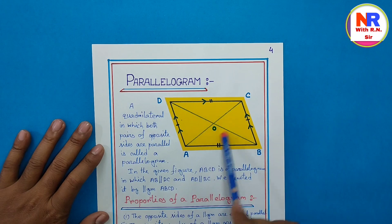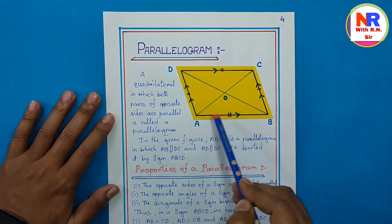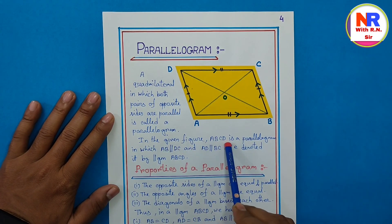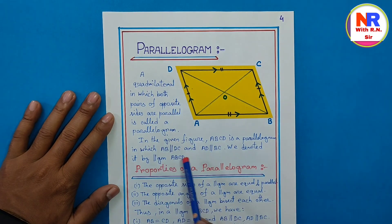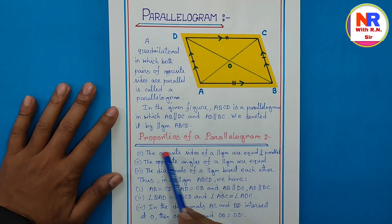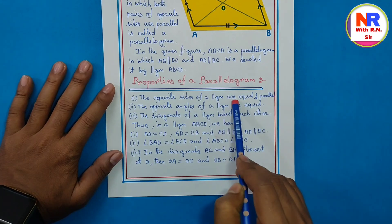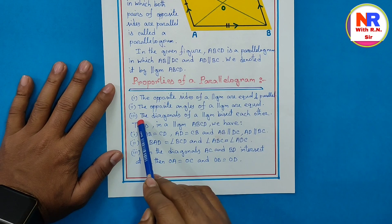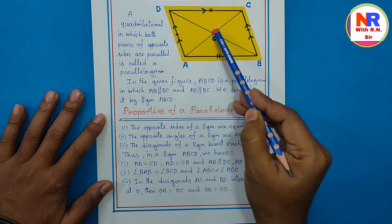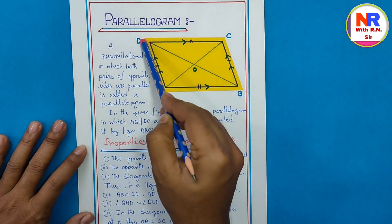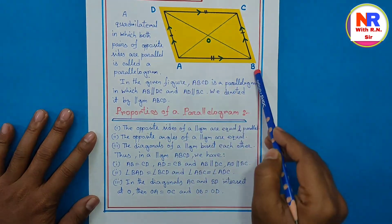Page number 4 — parallelogram. A quadrilateral in which both pairs of opposite sides are parallel is called a parallelogram. AB ∥ CD and AD ∥ BC. It is denoted by the symbol ∥gm, which is the short form of parallelogram. Properties: point 1 — opposite sides of a parallelogram are equal and parallel. Point 2 — opposite angles are equal. Point 3 — diagonals bisect each other at point O, meaning OA = OC and OB = OD. Thus in parallelogram ABCD: AB = CD, AD = BC, and both pairs are parallel.